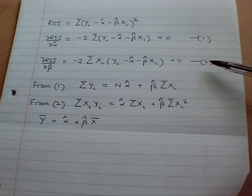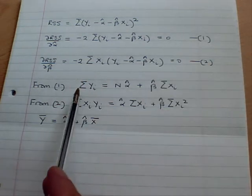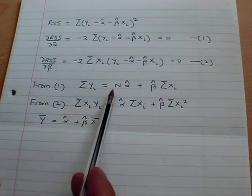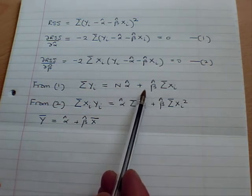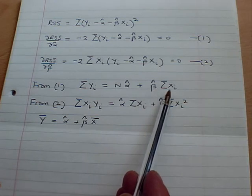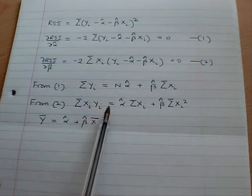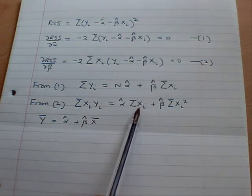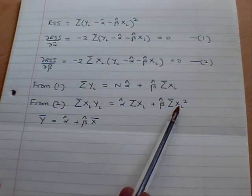Now from one and two we can derive the least squares normal equations fairly simply. First of all from one we have that the sum of y must equal n, the number of observations, times alpha hat plus beta hat times the sum of the x variables. And from two we have the sum of xi yi equals alpha hat times the sum of xi plus beta hat times the sum of xi squared.